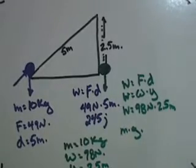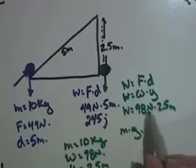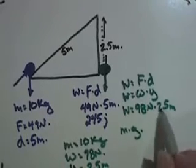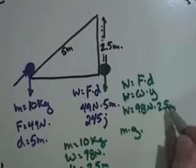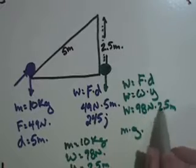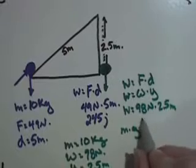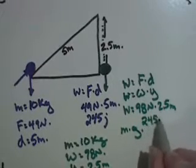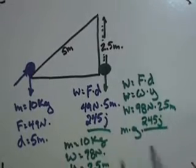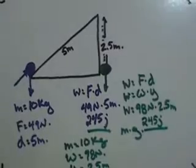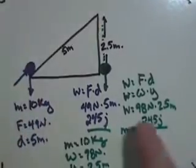So work would be equal to 98 newtons times the distance, and the distance would be 2.5 meters. And so 98 times 2.5 is almost 100 times 2.5. So that's 2.5 times 100 would be 250, and then minus 2 and a half times the difference, so minus 5. So that would be 245 joules. And the answer is, it's the same amount of work to push it up as to lift it.